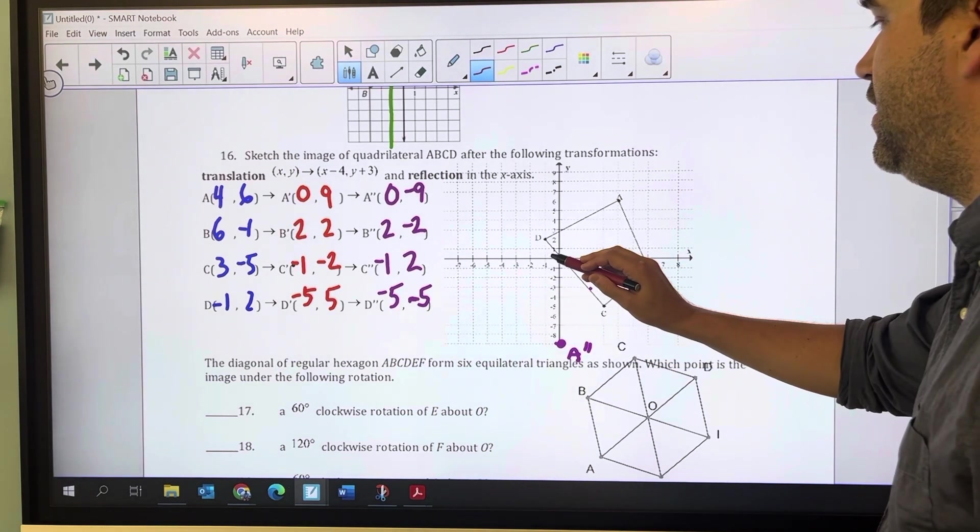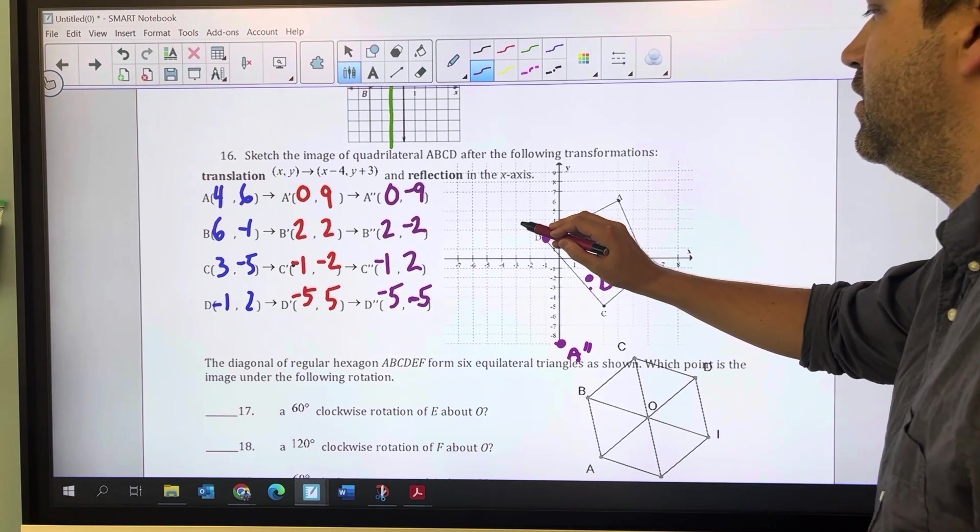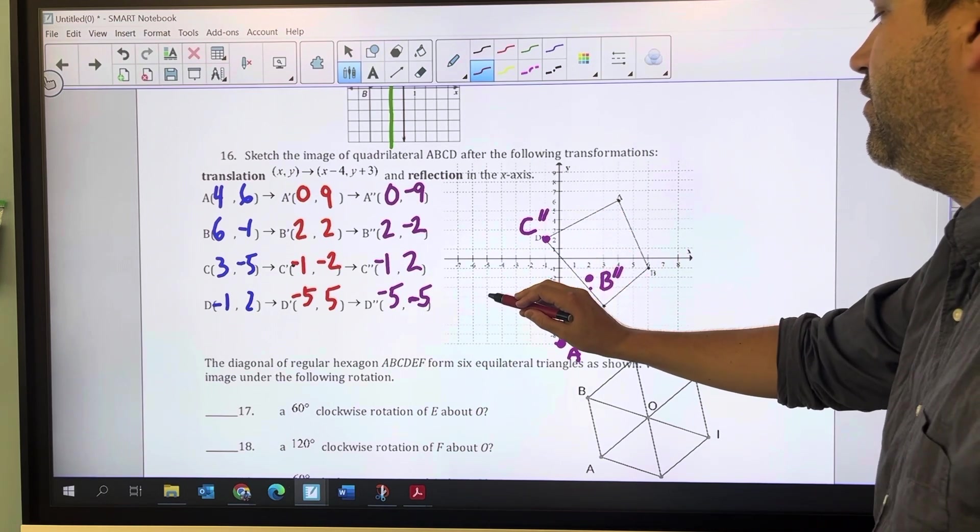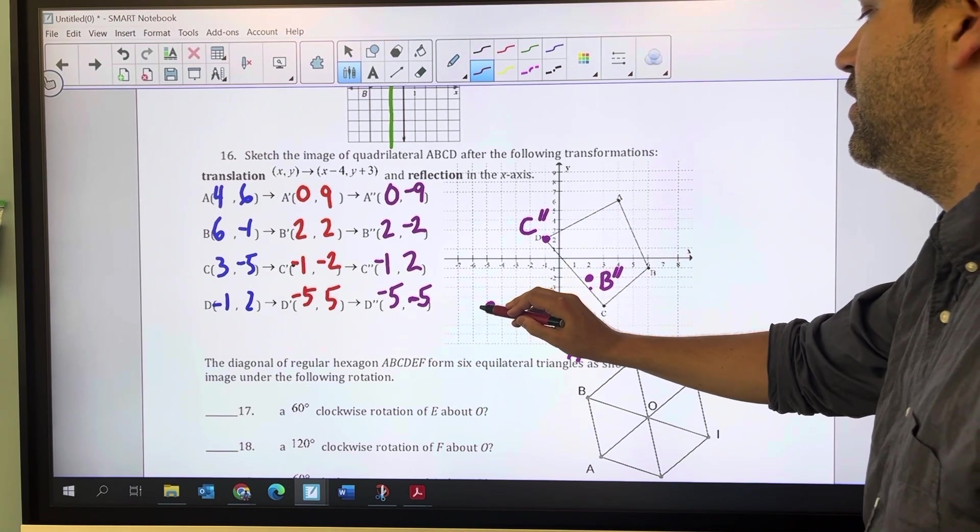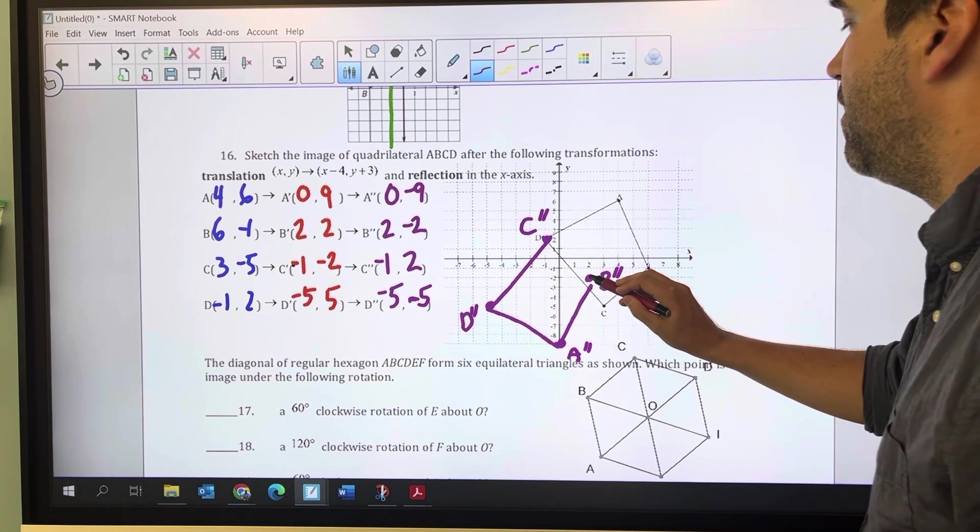C is (-1,2), C double prime. And D is (-5,-5), D double prime, right there.